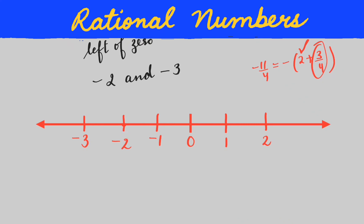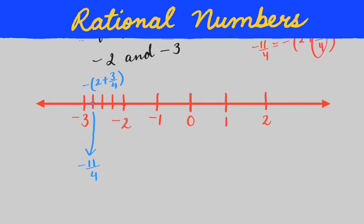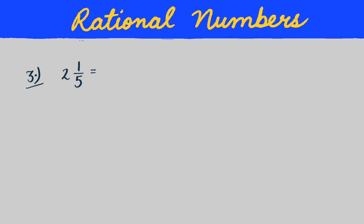We make four equal parts between -2 and -3 — one, two, three, four. Out of four we need three parts: one, two, three. This is the point -2 + 3/4, which is -11/4. This is clear.